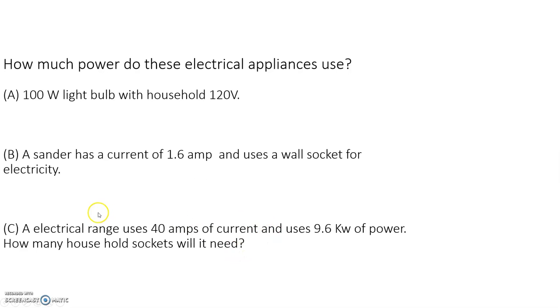An electrical range uses 40 amps of current and uses 9.6 kilowatts of power. How many household sockets does this need? Realize that this is in kilowatts, that's a thousand watts, so that's 9,600 watts. You take 9,600 and divide it by 40, and that gives you 240 volts. But the question asks how many household sockets do you need. One household socket is 120, so that means it uses two sockets to run an electric range.